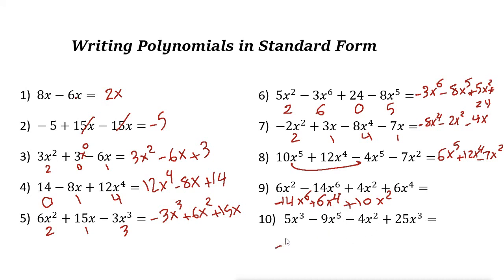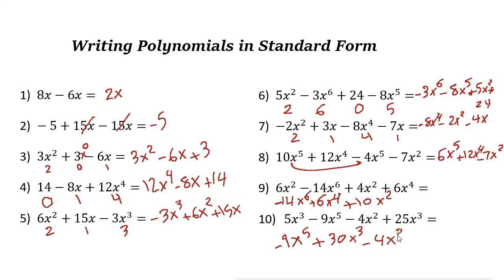The last example has degrees 3, 5, 2, and 3. First write negative 9x to the power of 5. The two degree-3 terms combine to give plus 30x cubed. So the order is degree 5 first, then degree 3, then degree 2: minus 4x squared.